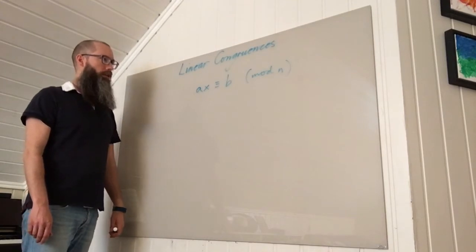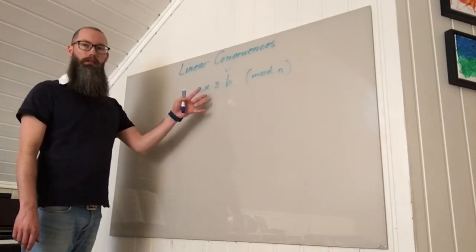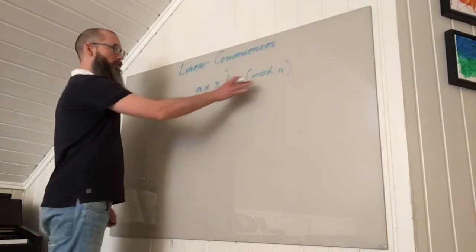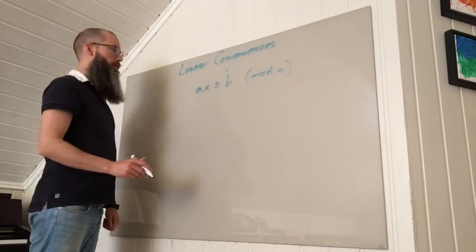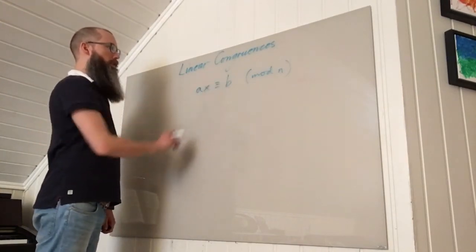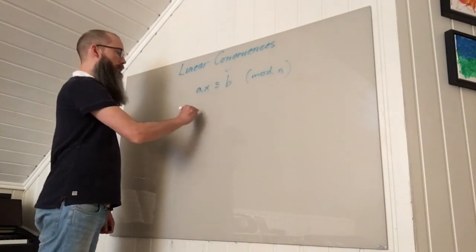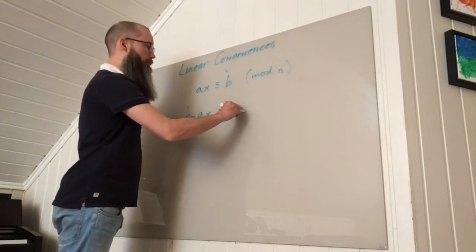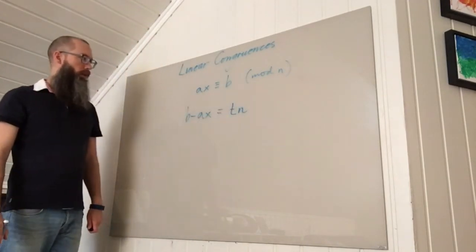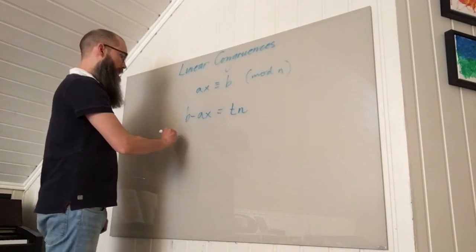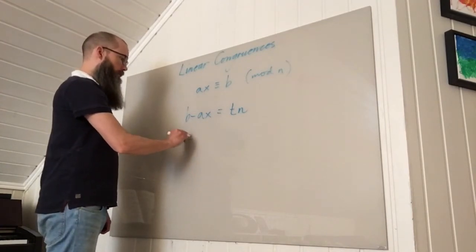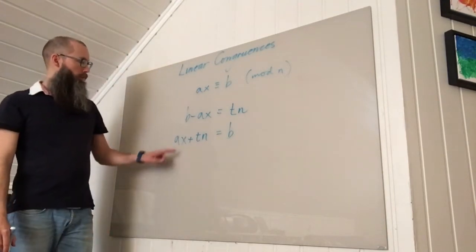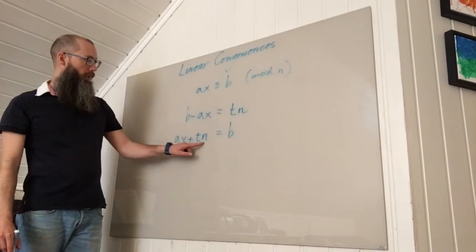The first thing we're going to do is identify when such congruences actually have a solution. Let's rewrite this statement using the definition of congruence. This states that the difference b minus ax is a multiple of n. If I reorganize this, I see that ax plus tn equals b.